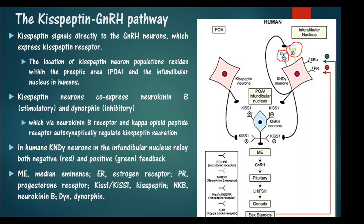Dynorphin produces a negative effect and neurokinin B produces a positive effect. Via the neurokinin B receptor, the kisspeptin neuron autosynaptically regulates kisspeptin secretion. In humans, the KNDY neurons (kisspeptin infundibular neurons) release both neurokinin B and dynorphin, producing both negative and positive feedbacks.